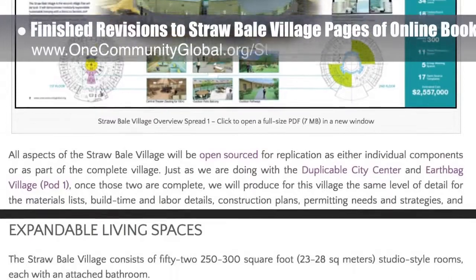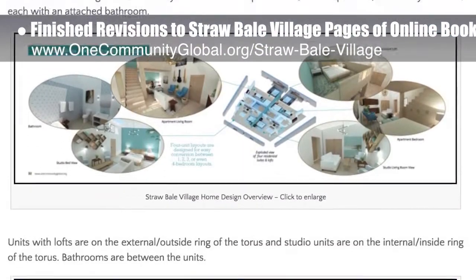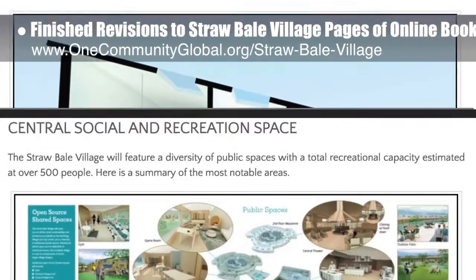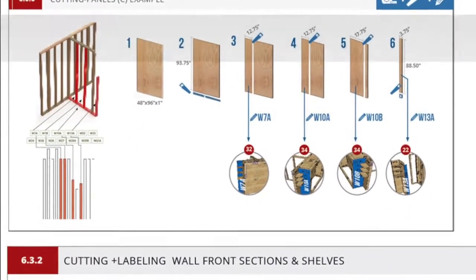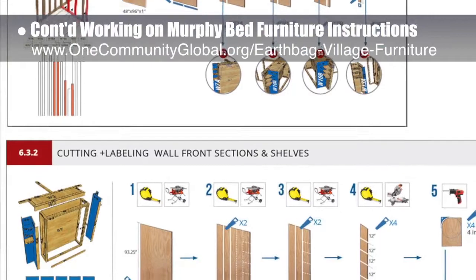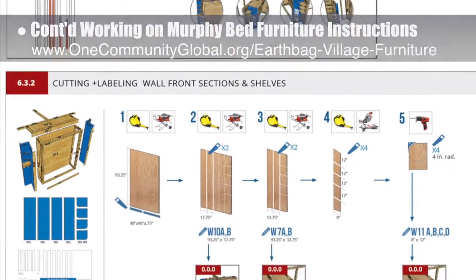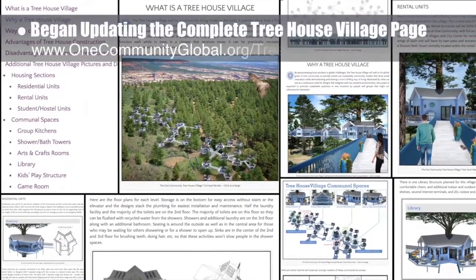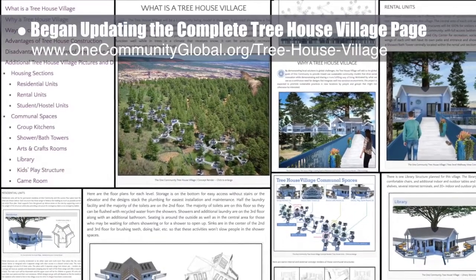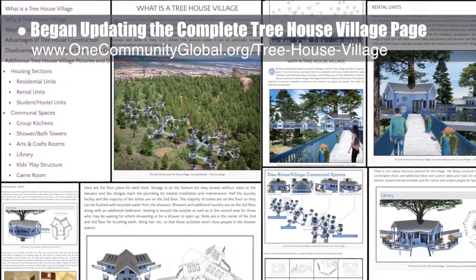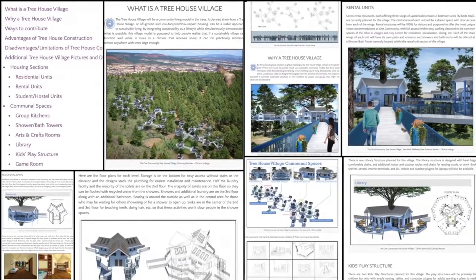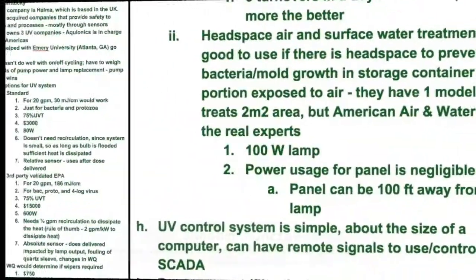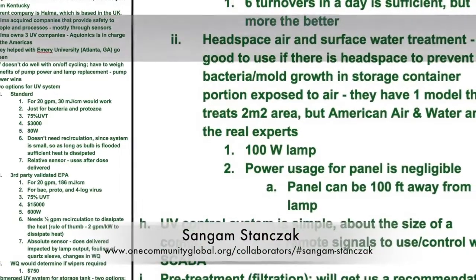Additionally, the core team finished revisions to the straw bale village pages of the online book we are creating, and added the finished pages to the website as click-to-enlarge images. The core team continued working on the murphy bed instructions, working on page 6.3.2 wall frame panels assembly page, to match the other pages as shown here. The core team also finished the first half of updating the complete treehouse village Pod 7 open source hub, including all new menus, formatting, and updated content covering the what, why, and description sections for every structure within this village.